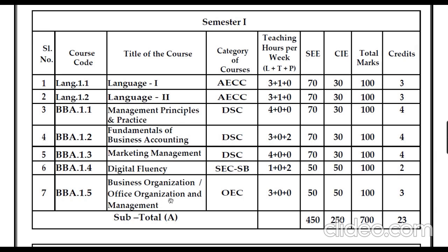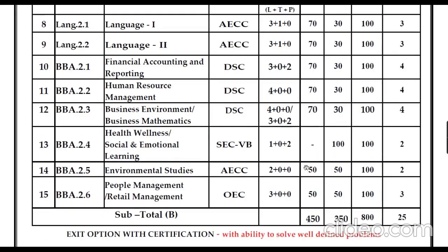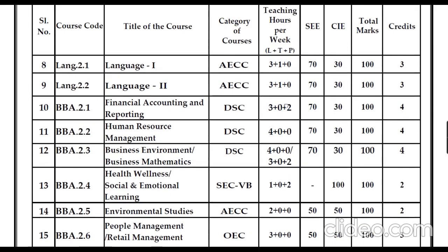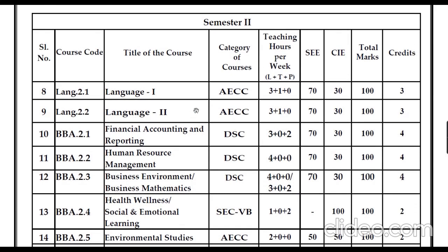Apart from these three core subjects and two languages, there is Digital Fluency as a skill enhancement, and Business Organization and Office Management as an open elective. The total will be 700 marks. As mentioned, the pattern has been changed — instead of a 70/30 ratio, it is now 60/40. Semester examination is 60 marks and college internal examination is 40 marks. Coming to the second semester...